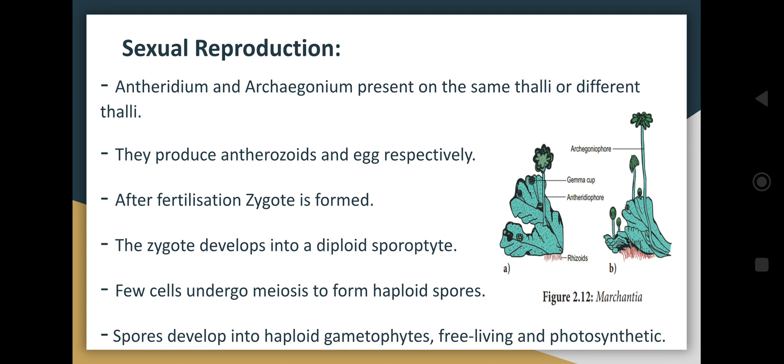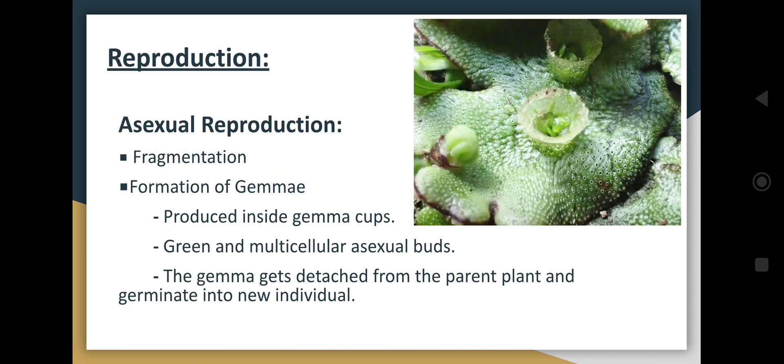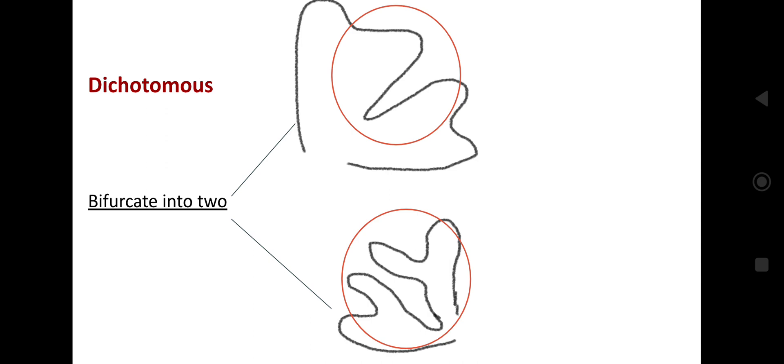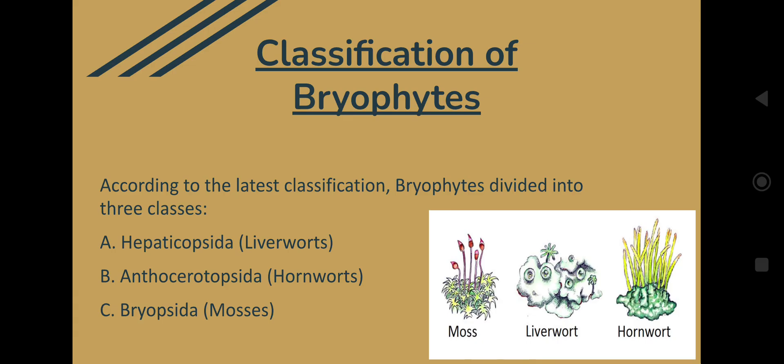The gametophyte is the dominant stage and the sporophyte is the dependent stage, which is dependent on the gametophyte. This was all about Hepaticopsida. In the next video, Anthocerotopsida and Bryopsida will be covered. Thanks for watching.